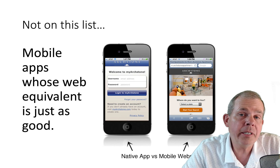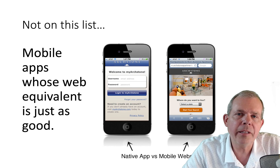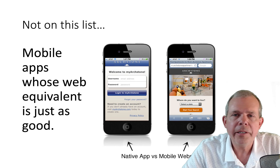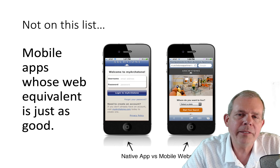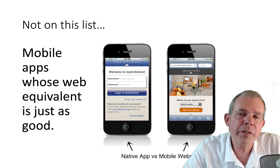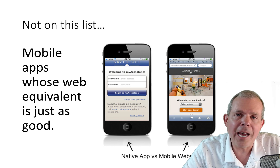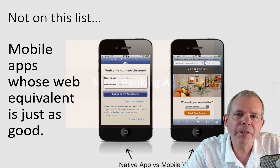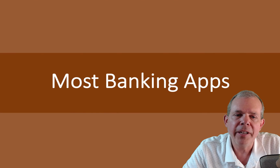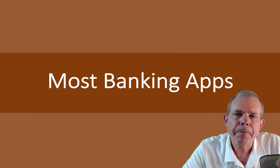For instance, Amazon — you can do all your shopping on Amazon right through their mobile website. So it might be a good idea to have the app, but not necessarily. What we're going to focus on here are apps that really require you to have a native app.